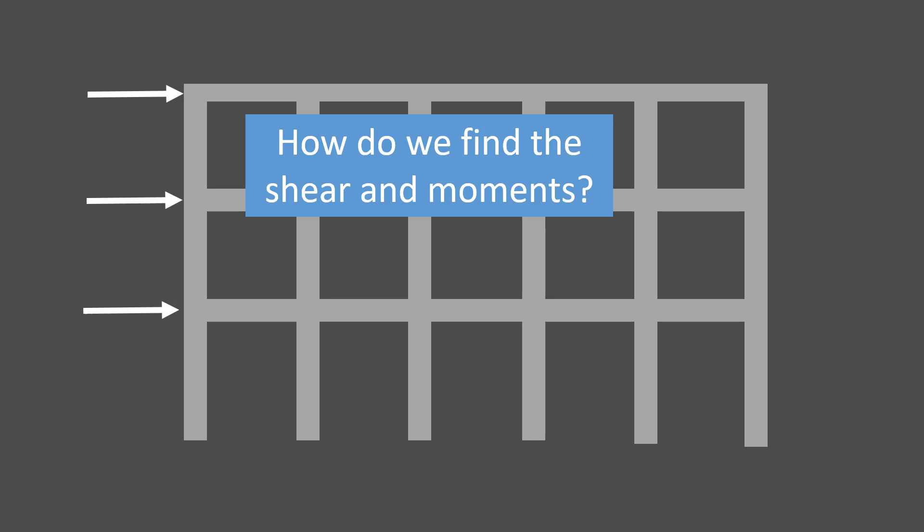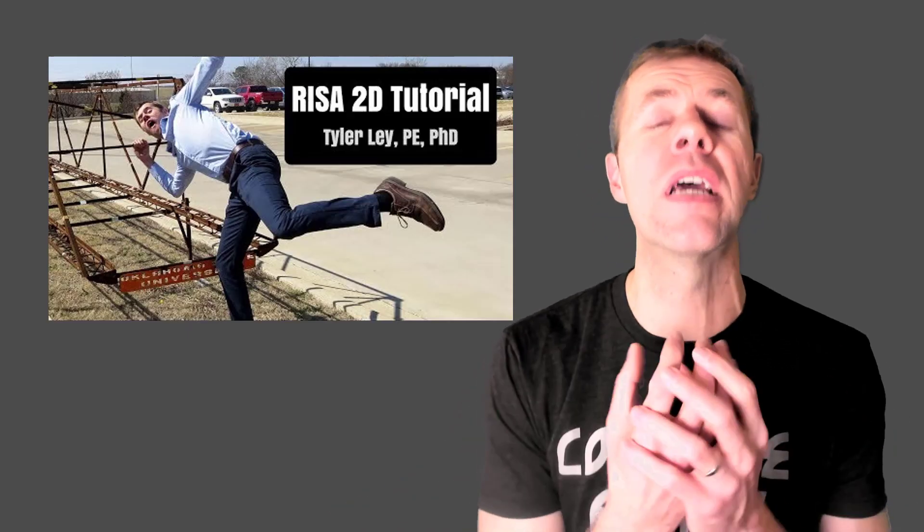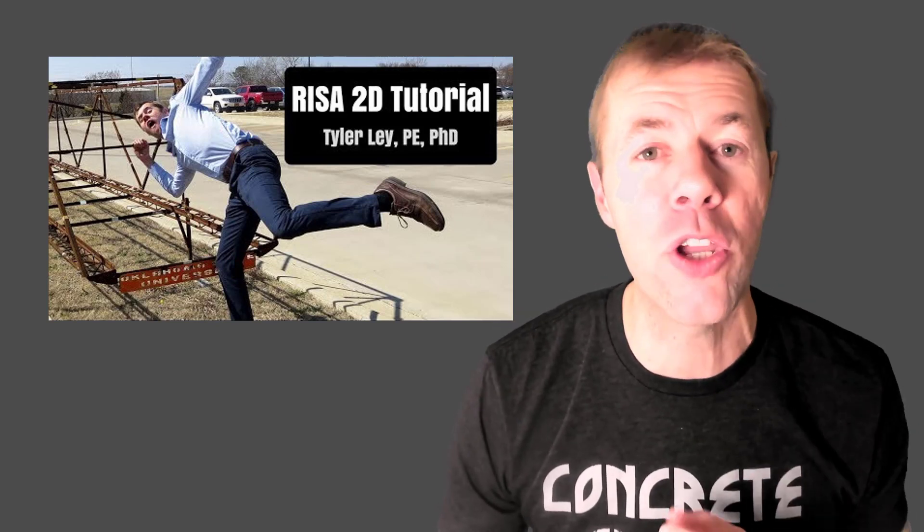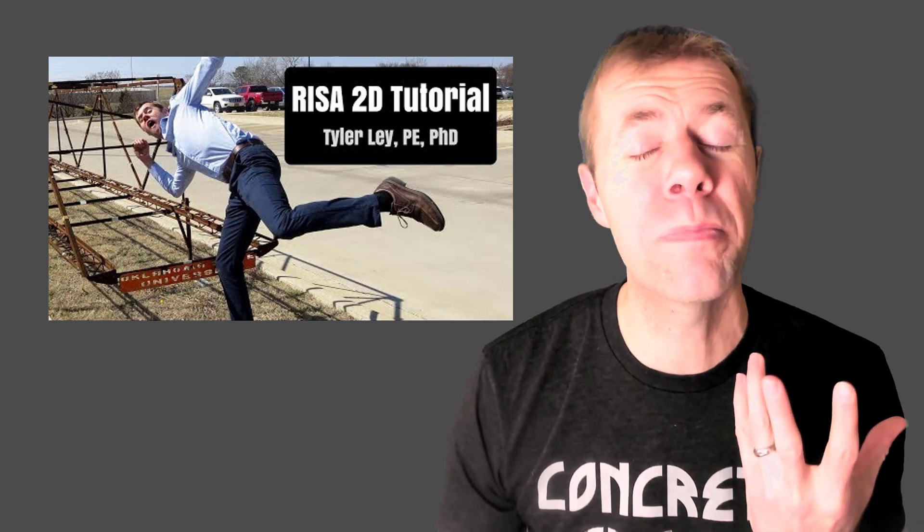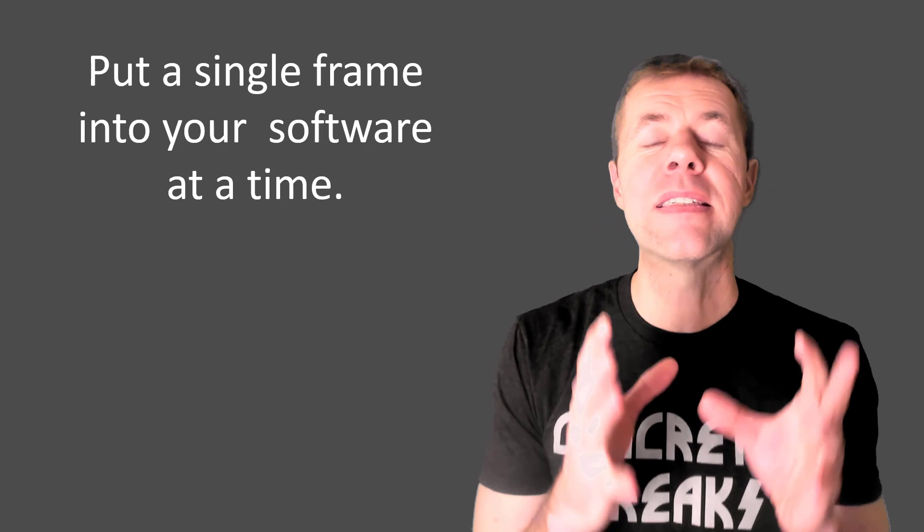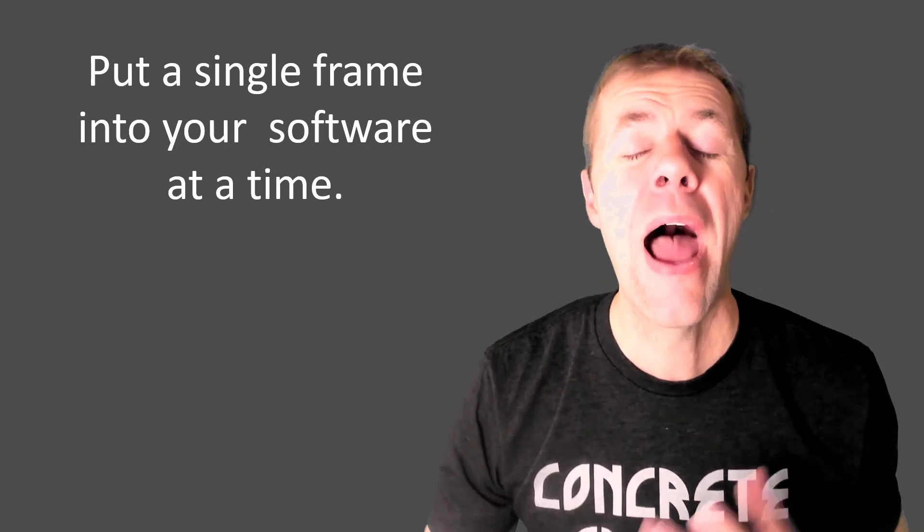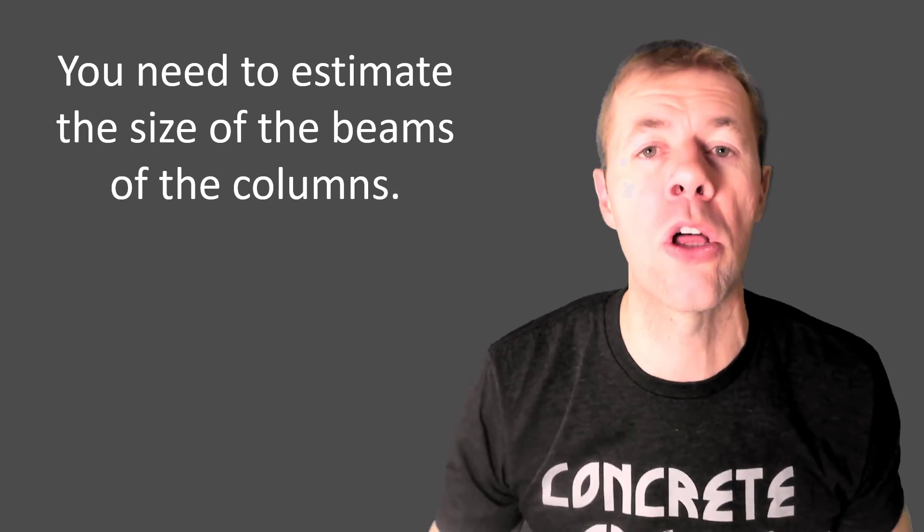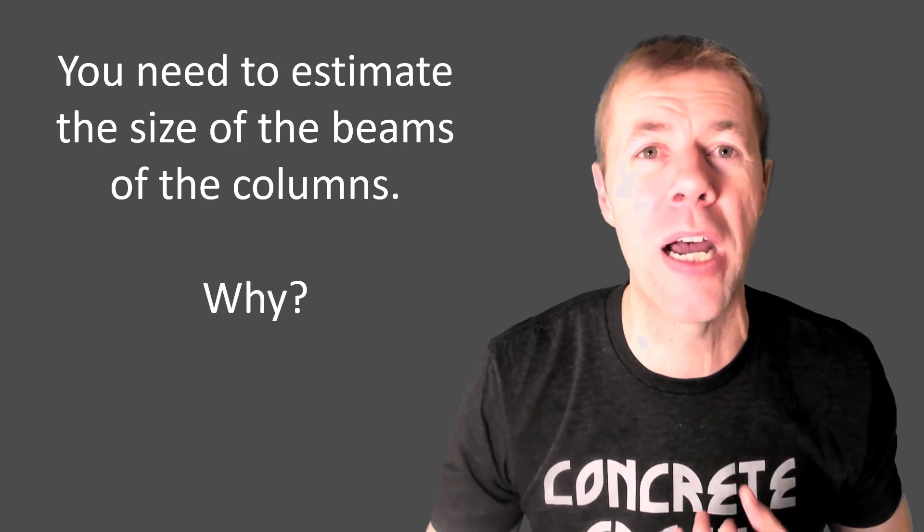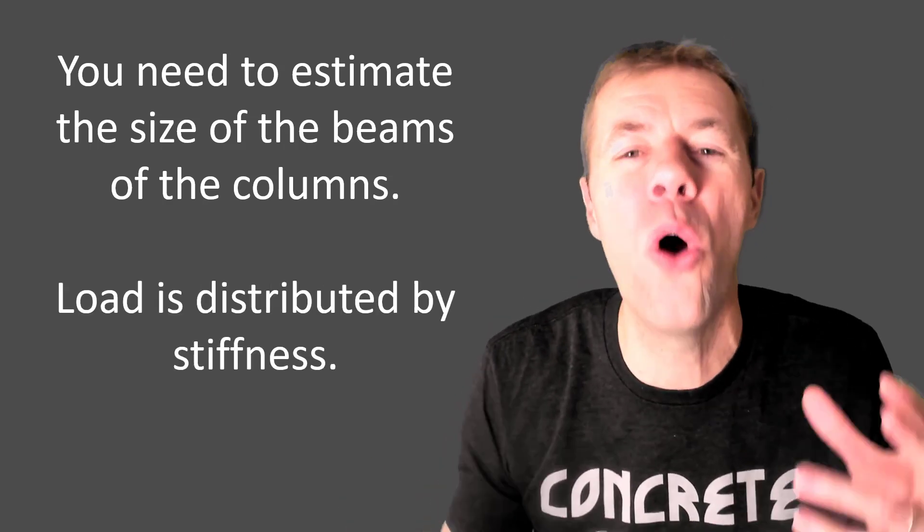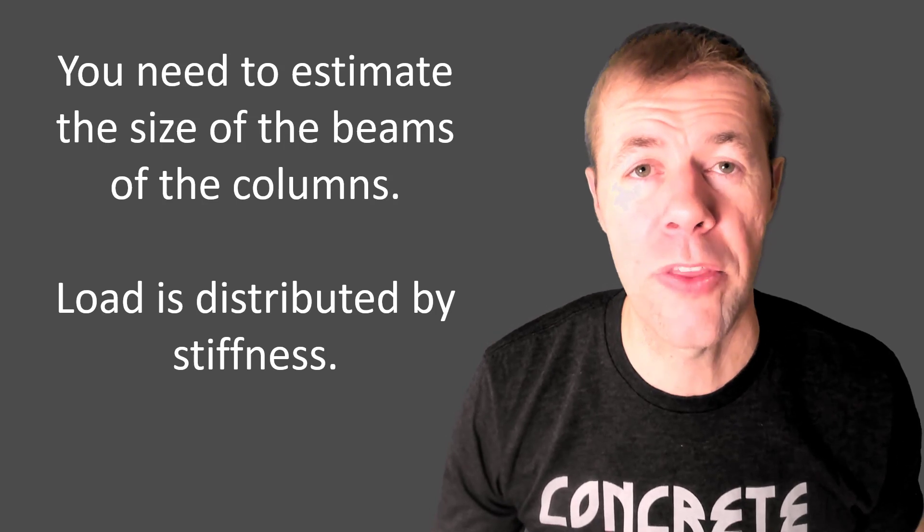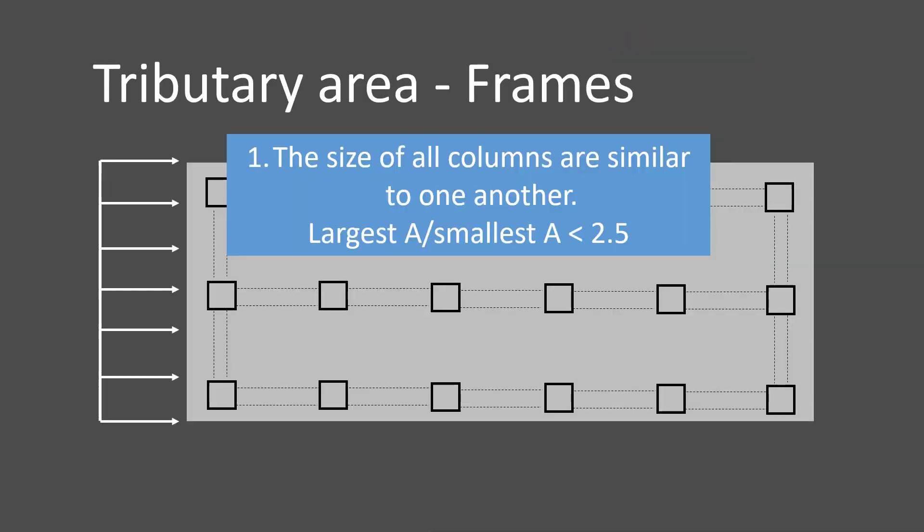So how do we find our shears and our moments? And for that, we're going to use our favorite computer program. I like Risa 2D. You should check this video out if you want to learn how to use it. It's very valuable, and it's free, and it's pretty simple to use as well. But you put a single frame typically into the software at a time, and then you solve for your moments and your shears. But you do need to estimate the sizes of your beams and your columns when you put them in. You don't have to get it exactly right, but you need to do your best. Why do you have to do this? Because load is distributed by stiffness. This is an indeterminate problem, and so it does matter the size of the beams and the columns and what they are relative to one another.